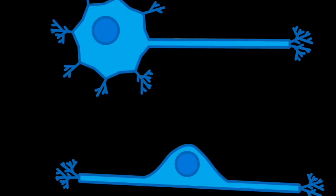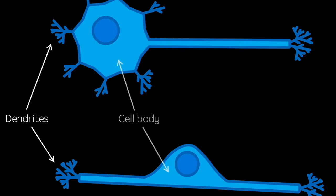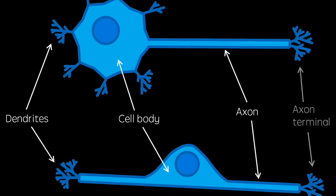these cells both feature dendrites, cell bodies, axons, and axon terminals. Sensory neurons are unique, however, in their possession of a dendron.